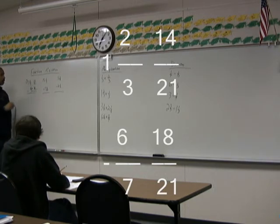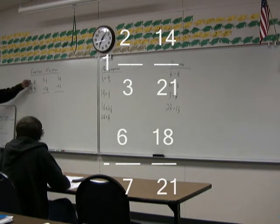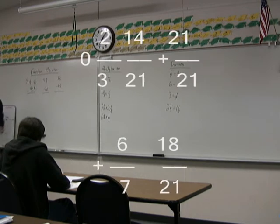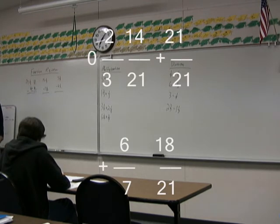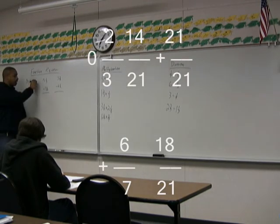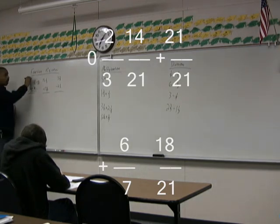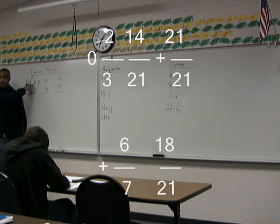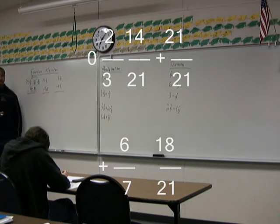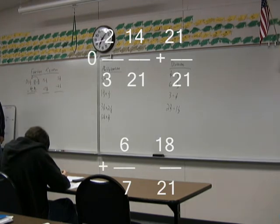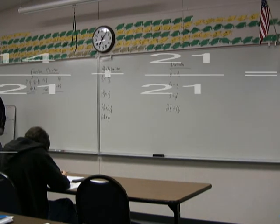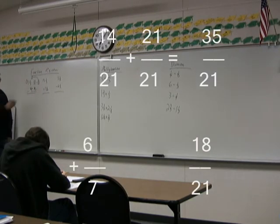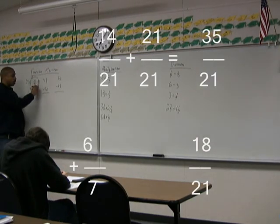So that becomes a zero. How do we get the one into this fraction? It's twenty-one over twenty-one. Because we borrowed this one, we have to express our one in terms of the denominator. Everybody knows twenty-one divided by twenty-one is one — that's our one that we borrowed. Fourteen plus twenty-one now becomes thirty-five.